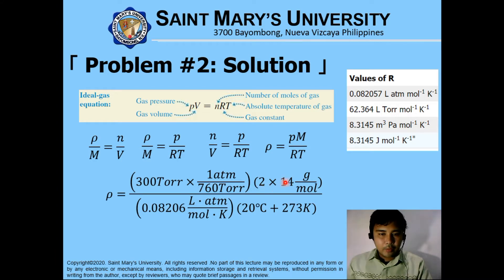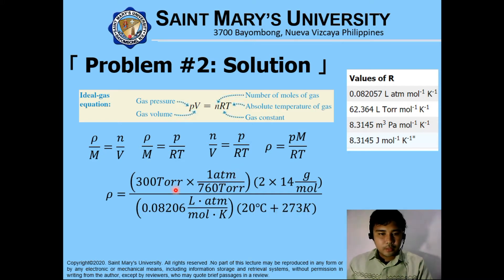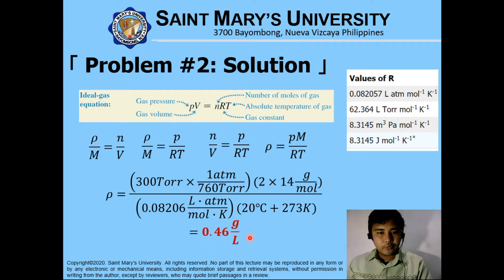For our molar mass, since we have the atomic weight of nitrogen which is 14 and we have a subscript of 2, times 2. Using liter atmosphere and the temperature of 20 degrees Celsius converted into Kelvin, atmosphere will be cancelling out, mole to this one. Kelvin also — the remaining is grams per liter, which is a unit for density, mass over volume. So the density is equivalent to 0.46 grams per liter.